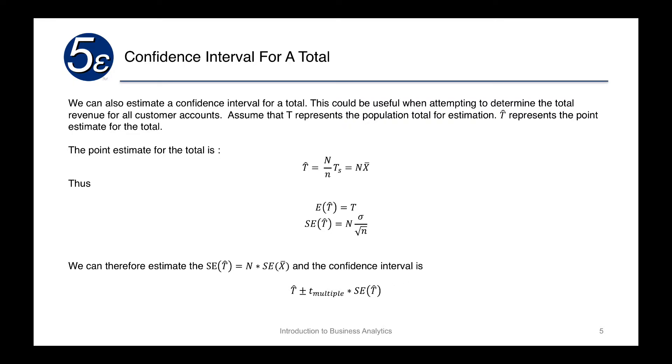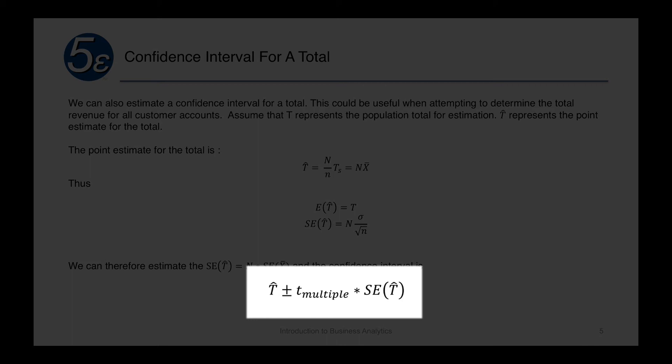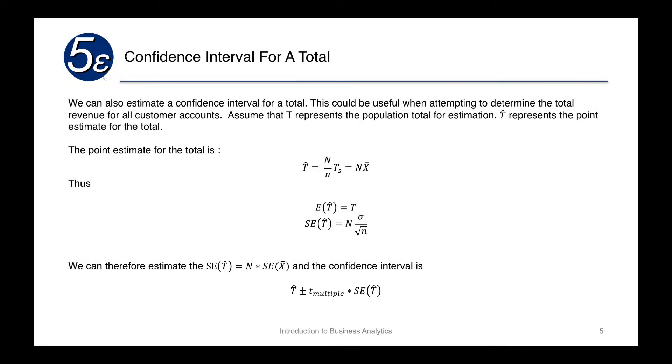And thus, we have the following confidence interval: T hat plus or minus the T multiple times the standard error of the predicted total. So let's take a look at an example for this.